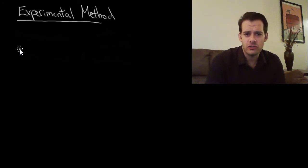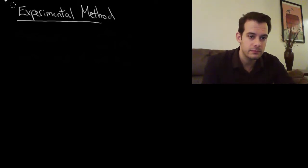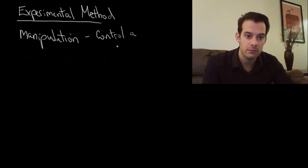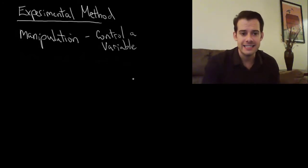The experimental method tries to solve this problem by using manipulation. What manipulation refers to is that researchers take control of one of the variables and manipulate it for some participants. What this manipulation accomplishes is it answers the question of why do people have some score for this variable. Well, the reason is that the researchers made them have that level.